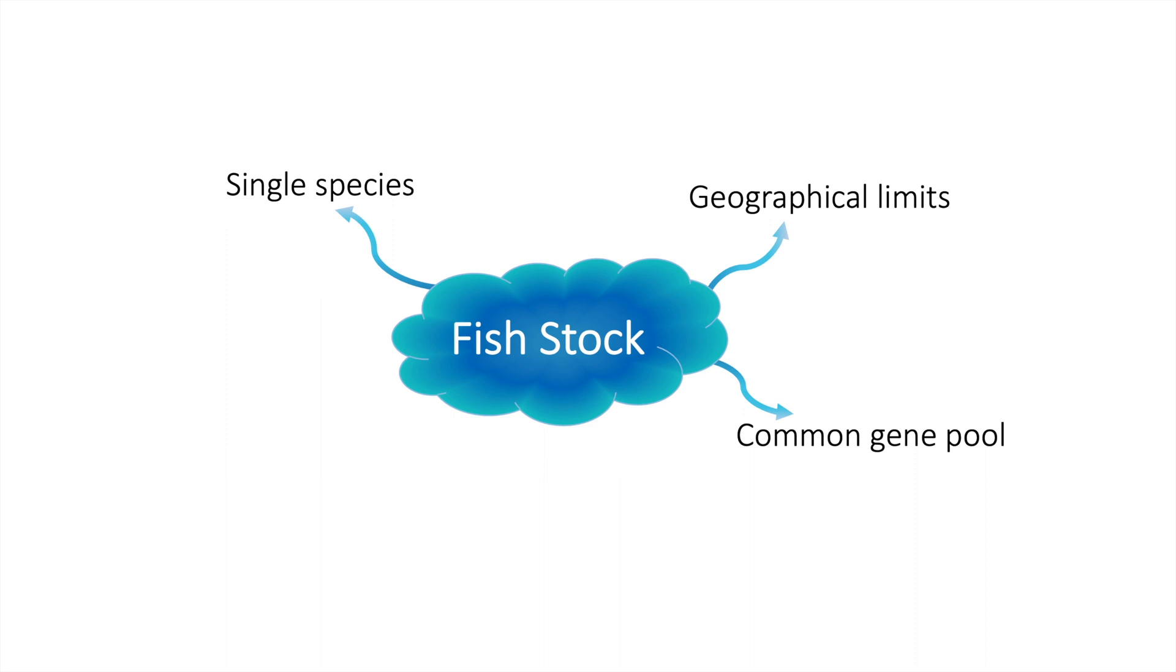This concept of showing a common gene pool was further developed in a paper by Cushing in 1968, which stated a fish stock is composed of individuals which consistently return to a single spawning ground.